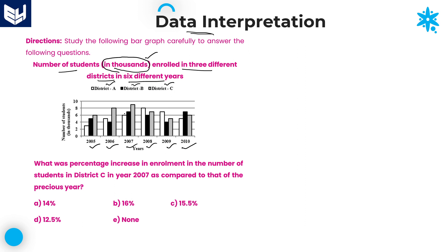For example, if you look at a bar that is at 8, it is nothing but 8,000. The meaning of that value is 8,000. Likewise, you need to take all the values.